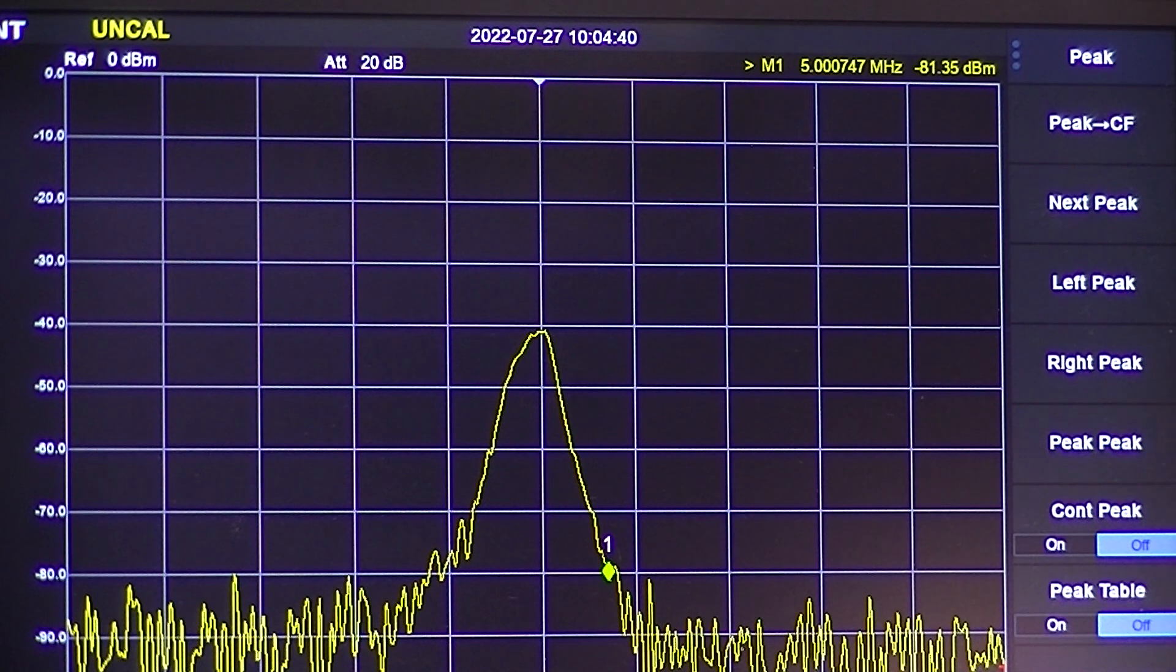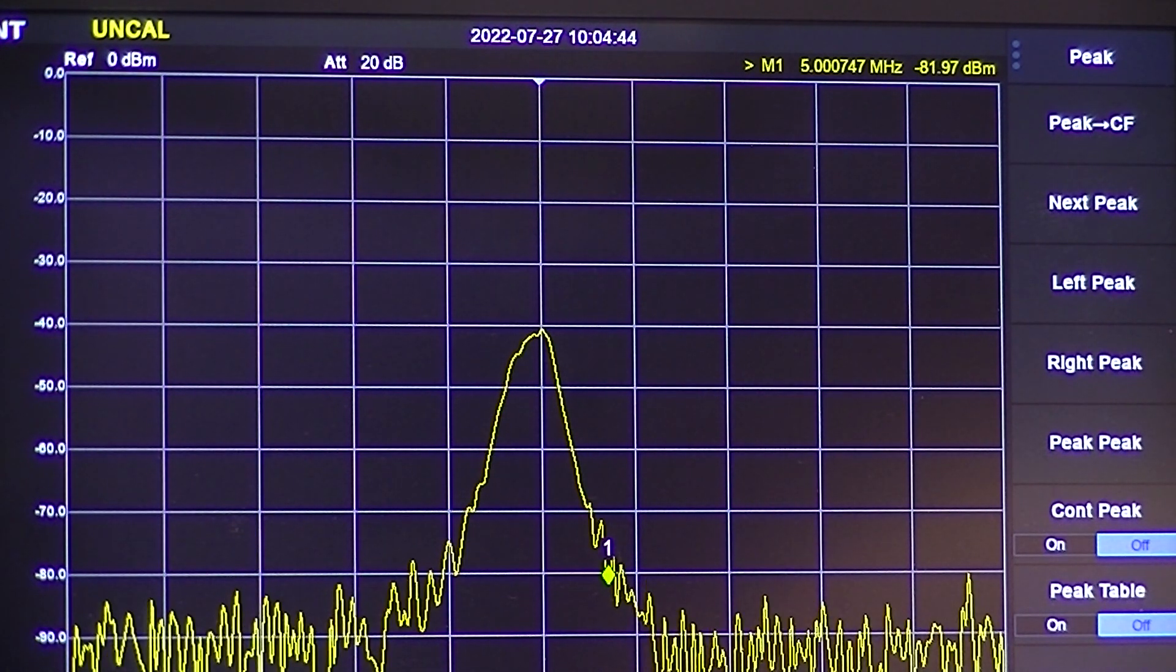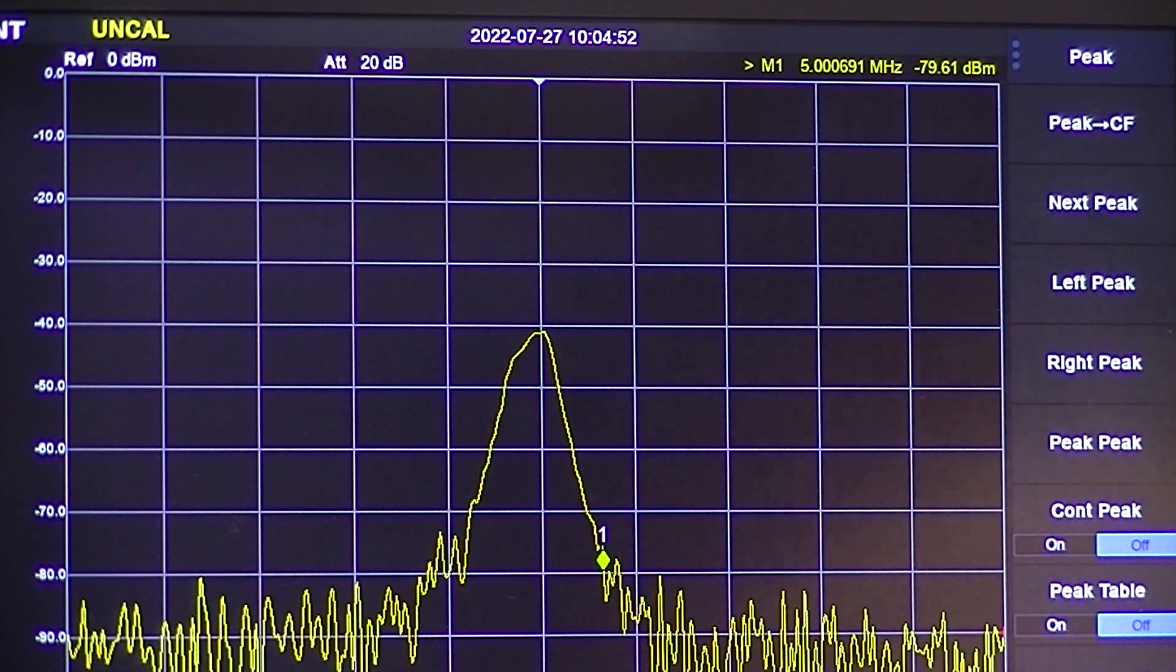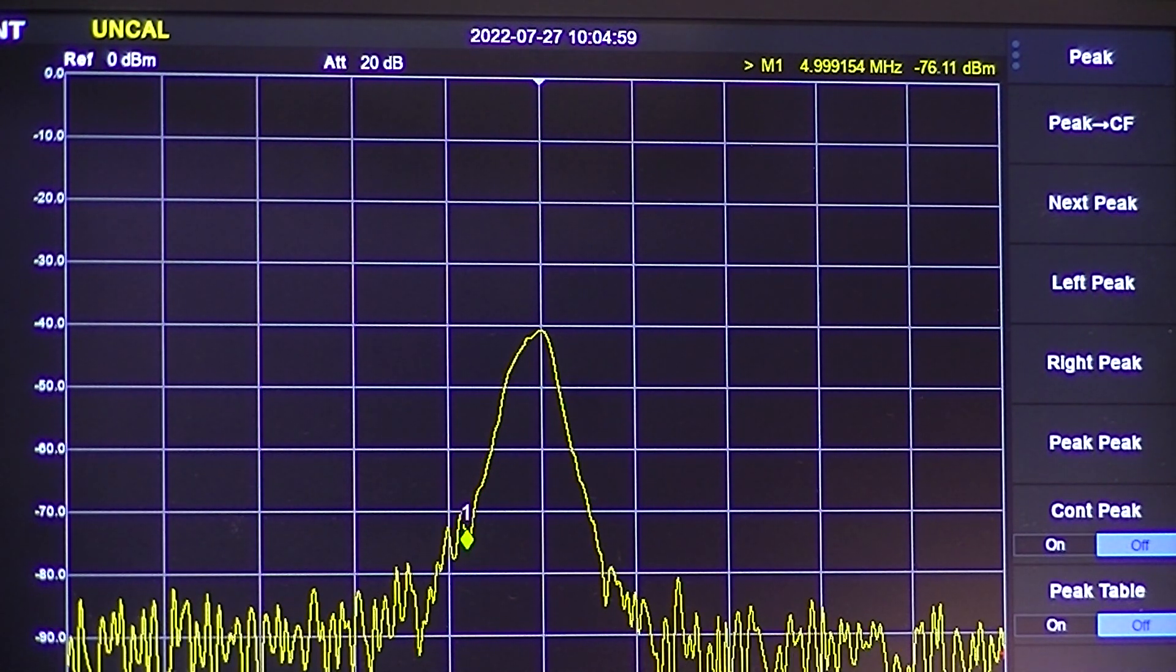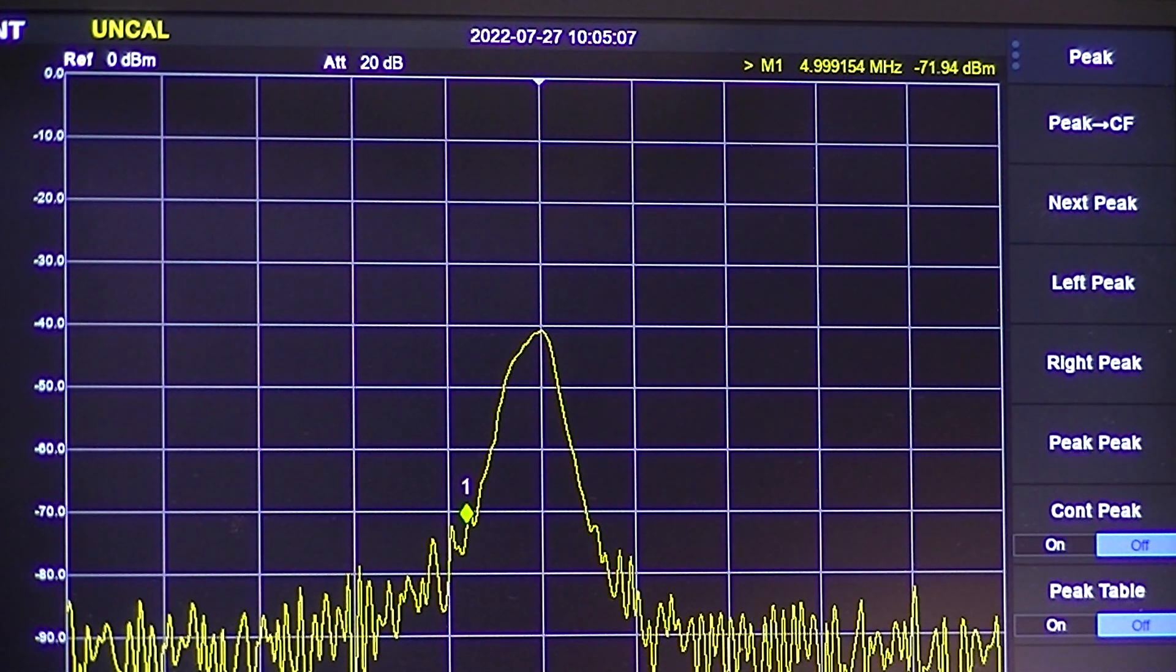This little dip down here is at minus 81. It changes every time it sweeps, but it's around minus 80. Same little dip over here is around minus 76. So that's a nice narrow band pass.